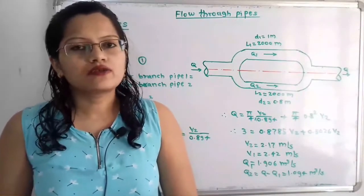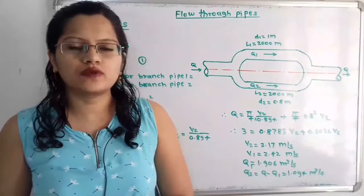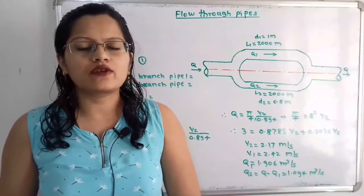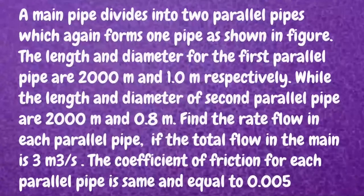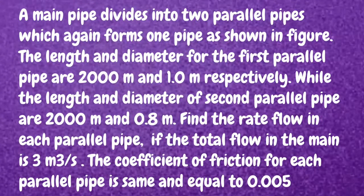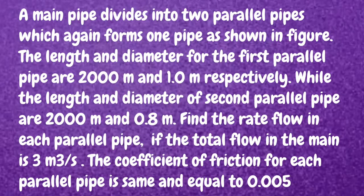Hello friends, this is Priyanka. Today we are going to solve a problem on flow through pipes. In this video we are going to find out the discharge through parallel pipes. A main pipe divides into two parallel pipes which again join into one pipe. The length and diameter for the first parallel pipe are 2000 meters and 1 meter respectively, while for the second parallel pipe they are 2000 meters and 0.8 meters. The total flow in the main pipe is 3 cubic meters per second, and the coefficient of friction for each pipe is 0.005.